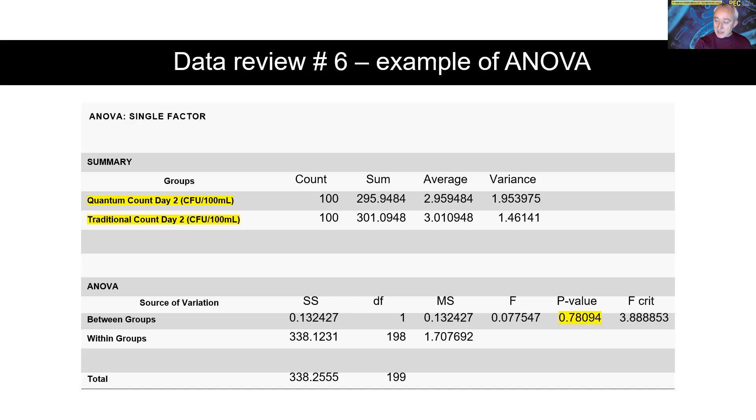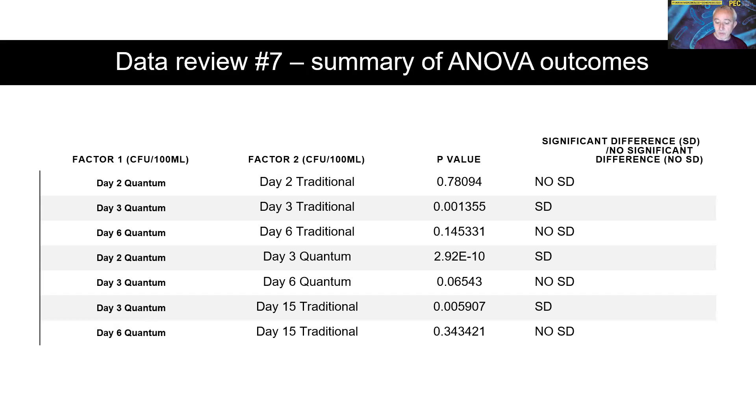We came up with the data to use for the ANOVA and put it through a statistical package and came out with the results, looking at the p-value. If the p-value is less than 0.05, we can reject the null hypothesis. So we're no longer saying that the two populations are equal. We found this fairly early on at three days. This says that the incubation time from the Milliflex quantum was significantly different and better than the conventional membrane filtration method at three days.